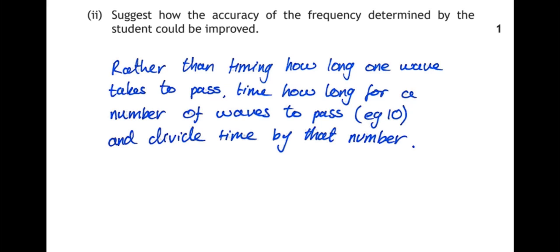Another way to do it would be to time how many waves pass the point in a particular period of time, for example, one minute. And then you could divide 60 seconds by the number of waves to find out the time for one wave.